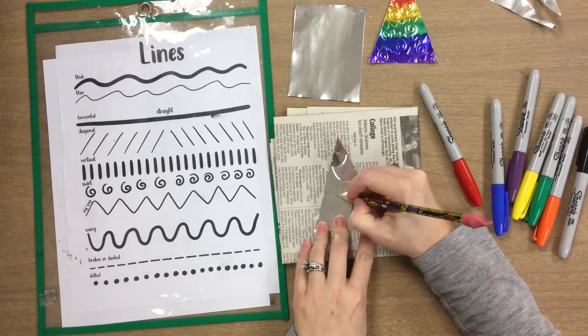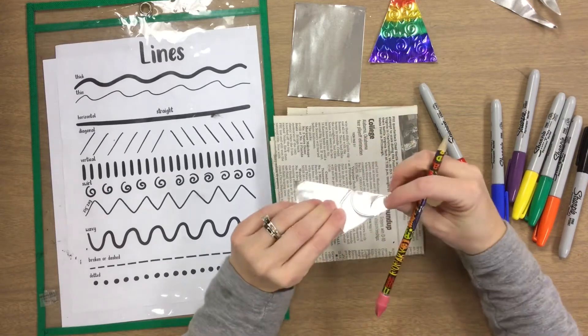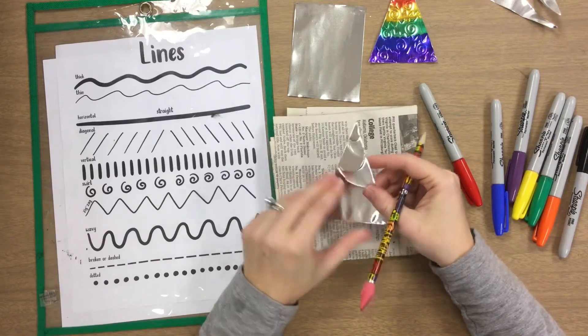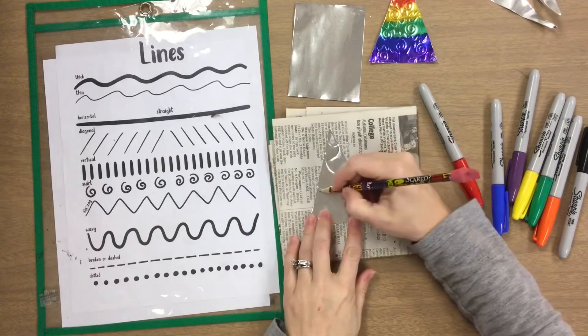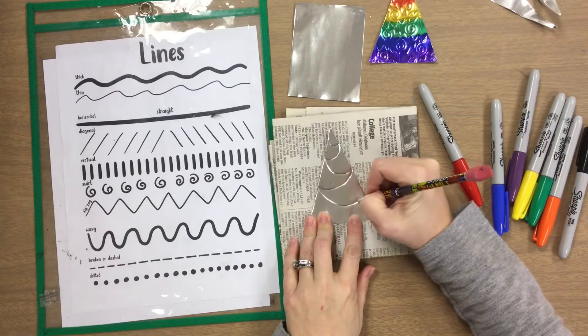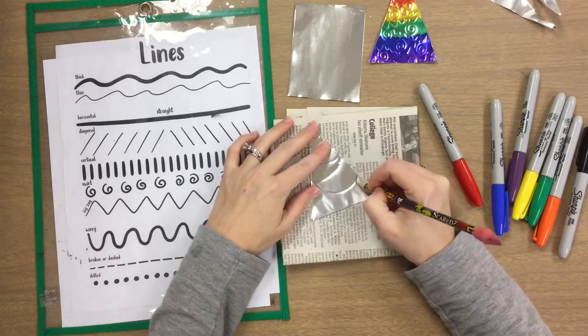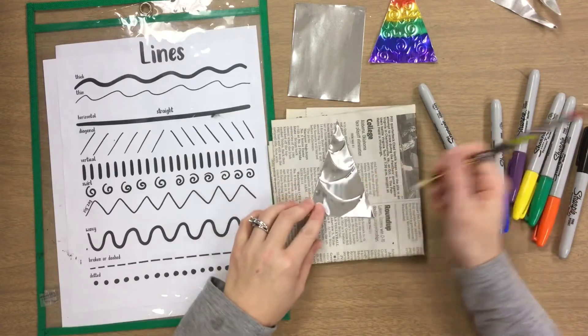I'm pressing hard into the foil so it's making these creases. You can see you can decide which side you want to be the front, which side you want to be the back.